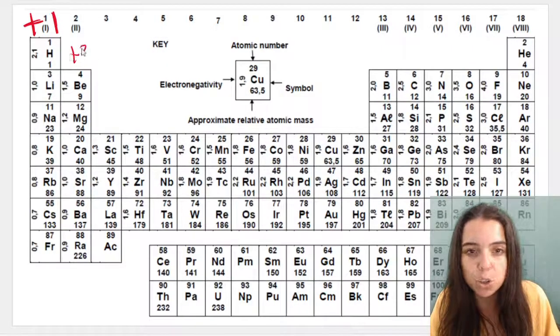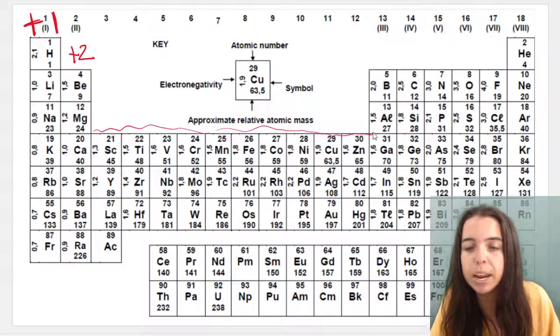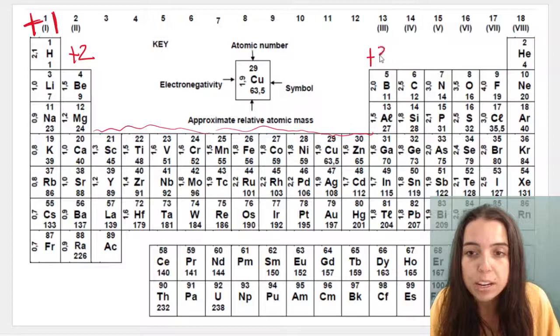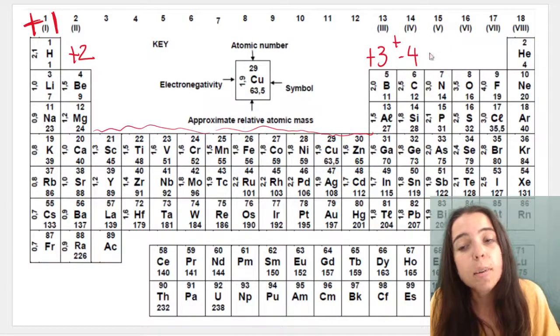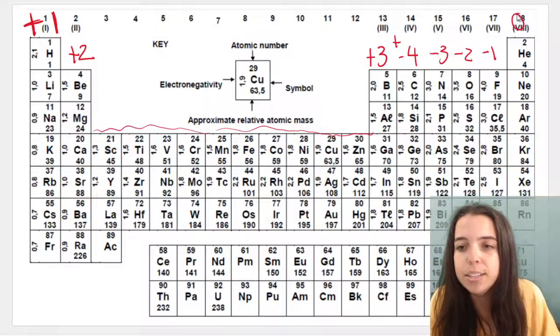Then we're going to write a plus two. We're going to skip this middle block over here and I will explain why in a later video. Then we're going to write plus three. Then we're going to write plus minus four. Then it's minus three, minus two, minus one and finally zero.